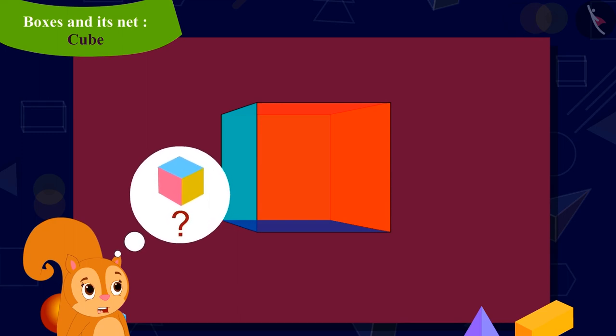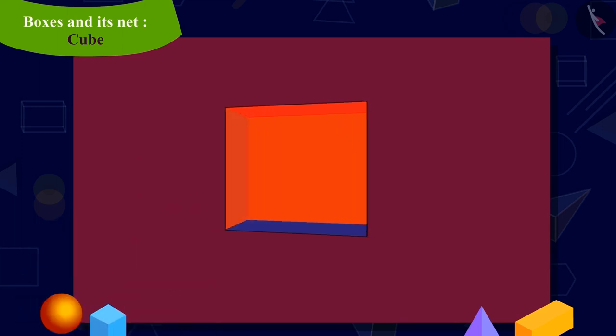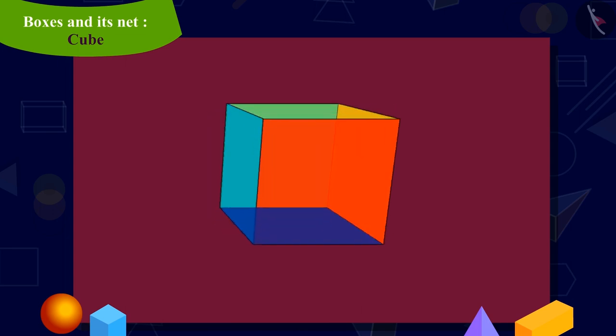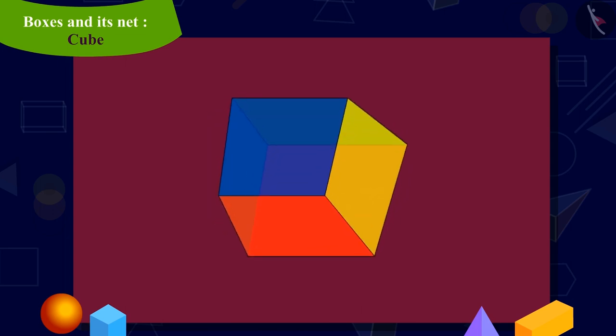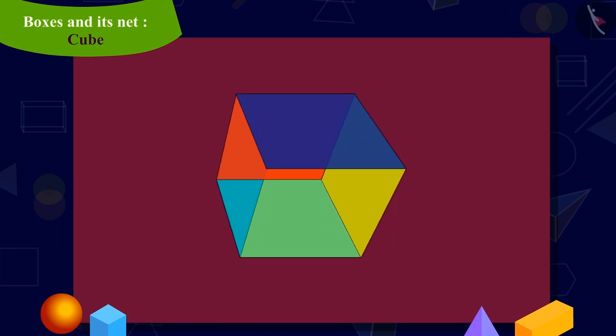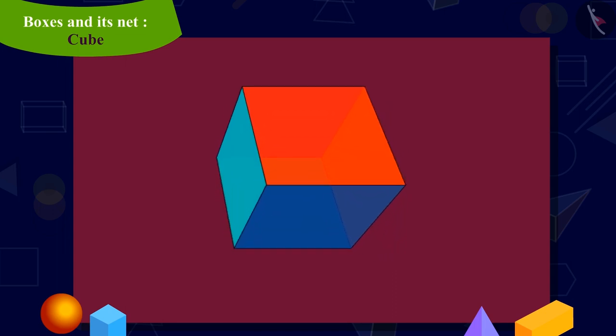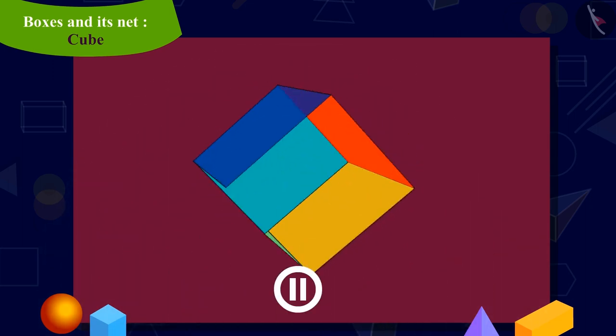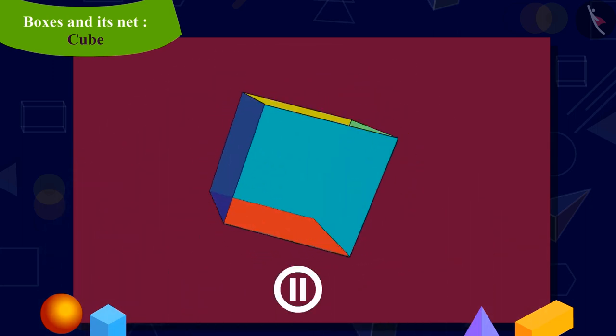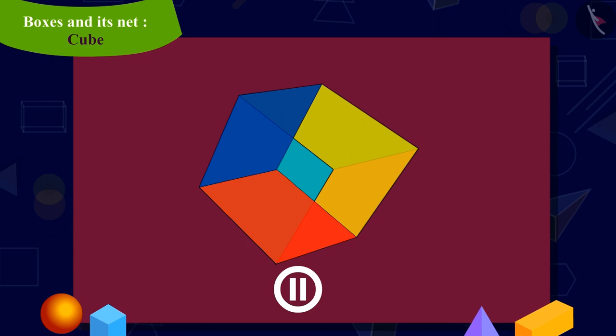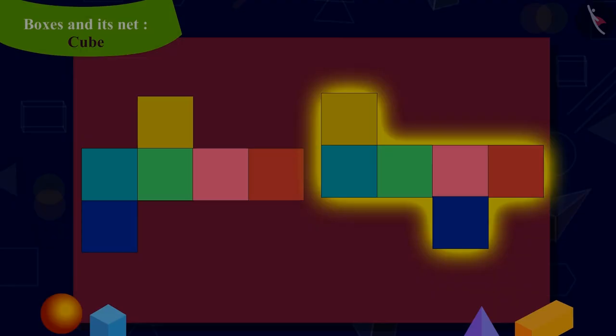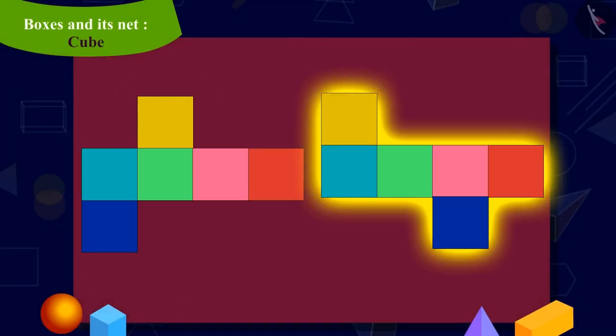Kids, can you help Chanda in making a third cube shaped box? Keep in mind that all the six faces in your figure should be square and when folded they should form a cube shaped box. You can stop this video and try to make it in your notebook. Kids, you can make this shape in these ways too.